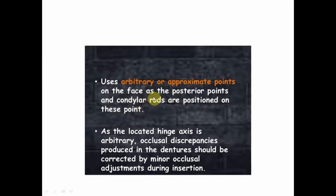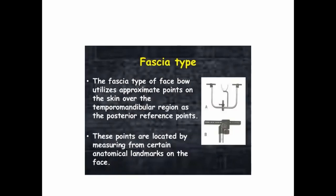The arbitrary facebow uses arbitrary or approximate points on the face as the posterior reference points, and the condylar rods are positioned on these points. The arbitrary points are approximately located over the skin of the TMJ. As the located indices are arbitrary, occlusal discrepancies may be produced in the dentures, which can be corrected by minor occlusal adjustment during insertion of the denture.